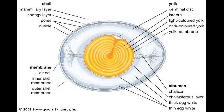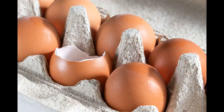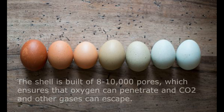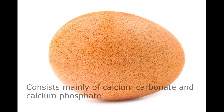The egg shell has mainly four parts: the mammillary layer, spongy layer, pores, and cuticles. The shell is built of 8,000 to 10,000 pores, which ensures that oxygen can penetrate, and carbon dioxide and other gases can escape. The shell represents about 10% of the weight of the egg and consists mainly of calcium carbonate and calcium phosphate. The shell thickness, and thus the strength, depends on egg size, breed, the age of the hen, and feed composition.